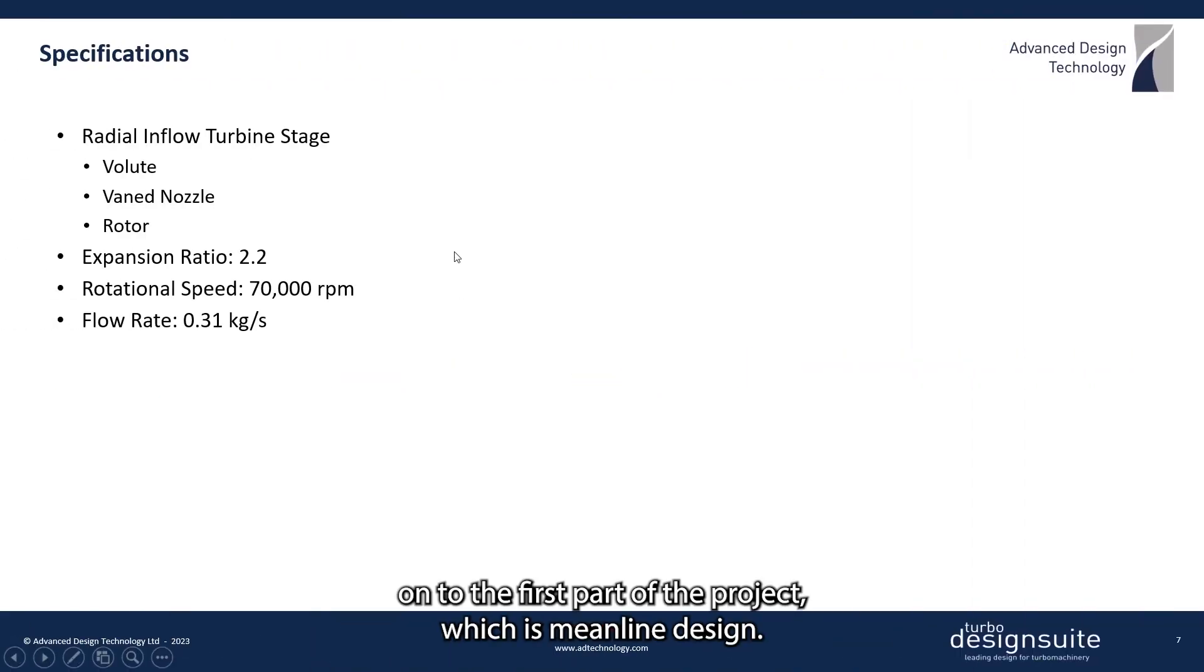Now moving on to the first part of the project, which is meanline design. Here are the specs that are used to design the radial inflow turbine stage, which consists of a volute, a vane nozzle, and a rotor.